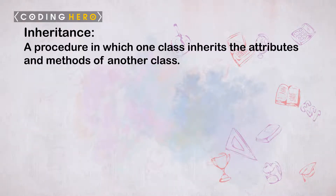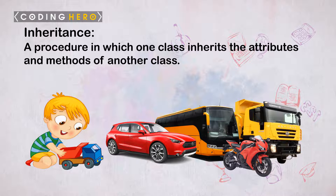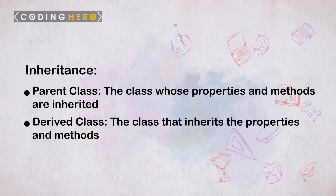Inheritance is where a class reuses the implementation of another class or specifies a new implementation. For example, a car is a type of vehicle which runs on a road and uses fuel. When you describe other vehicles such as a bus, truck, or bike, you don't have to say again that they run on a road and use fuel — you simply say these are vehicles. Vehicle is a broad category, and car, bus, and truck inherit the attributes of a vehicle and also have their own unique attributes. Inheritance is the procedure in which one class inherits the attributes and methods of another class. The class whose properties are inherited is known as the parent class, and the class that inherits is known as the child or derived class.